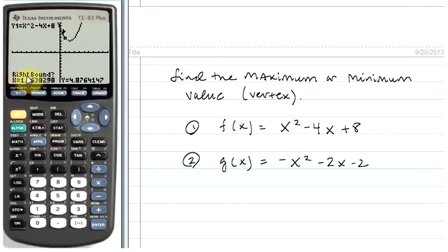Now, the calculator is asking us to move the cursor to a point that's close to the vertex, but to the right of it. I'll use my arrow keys to move the cursor somewhere that is close to the vertex here, but definitely to the right of it. And then click enter.